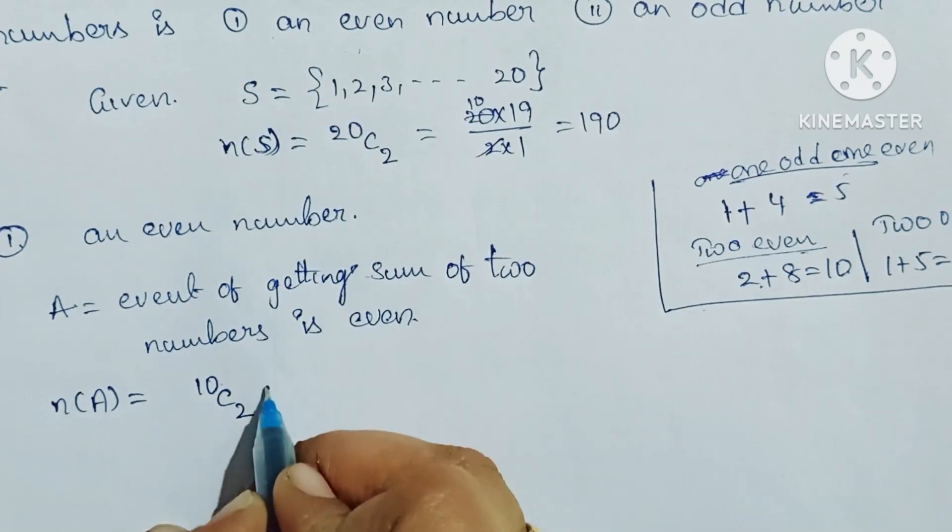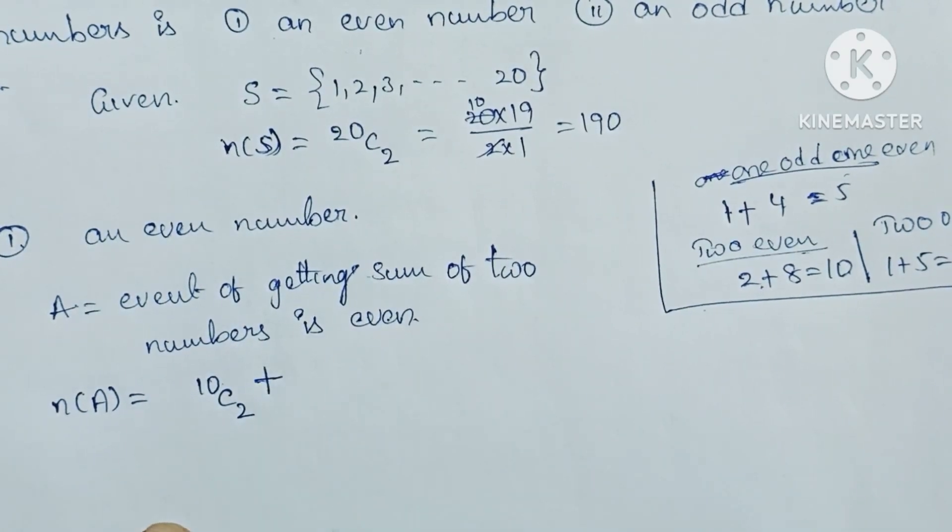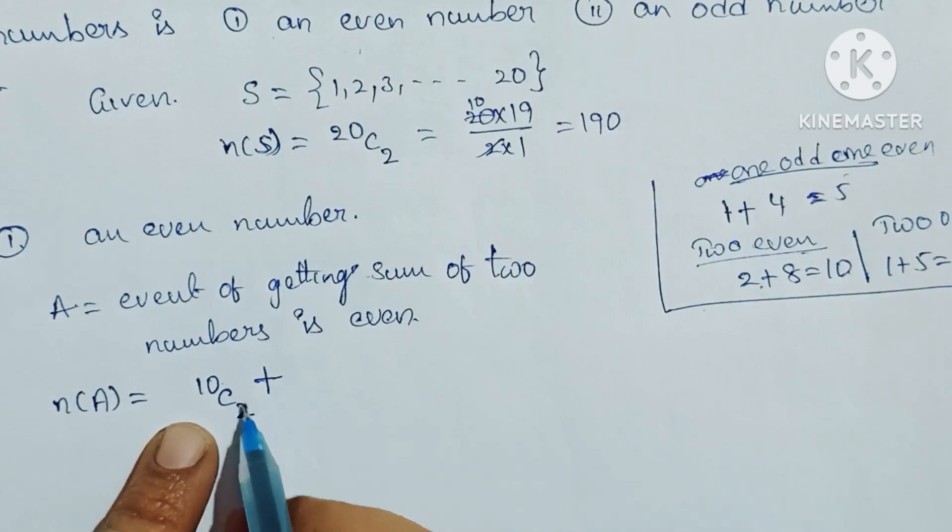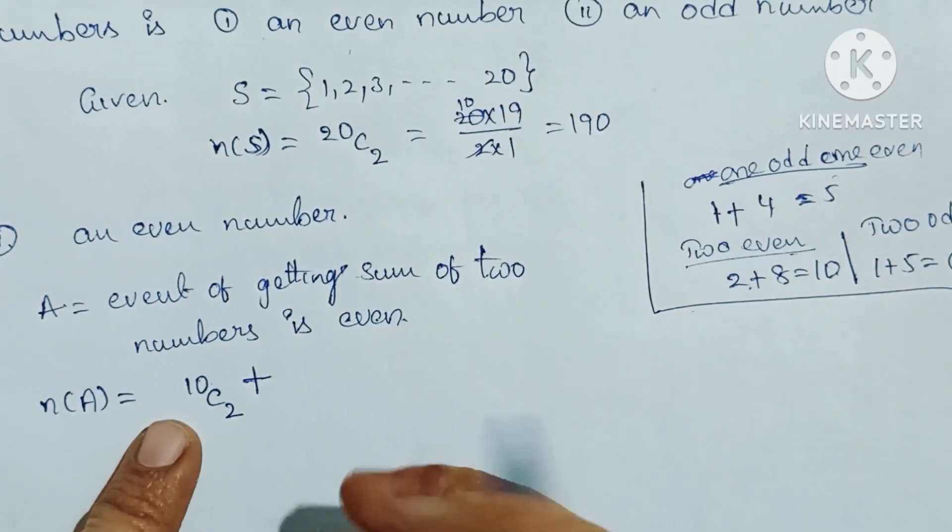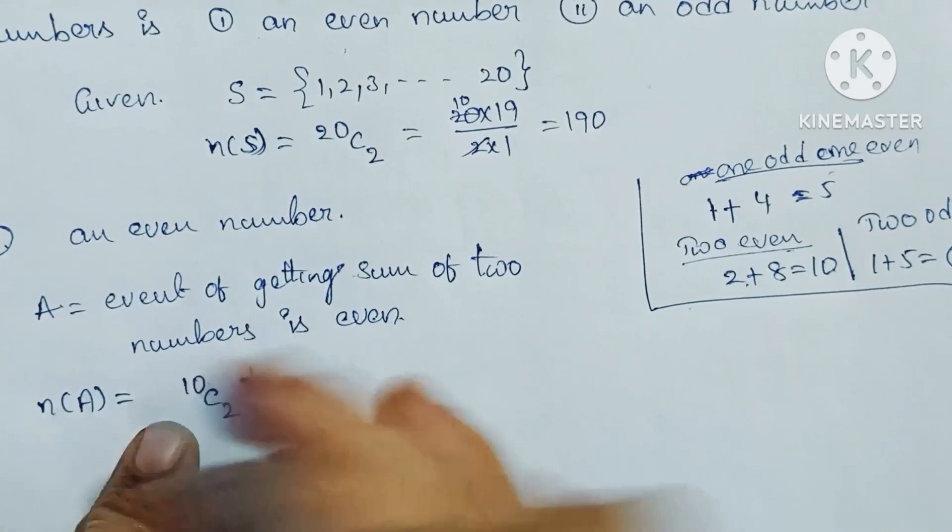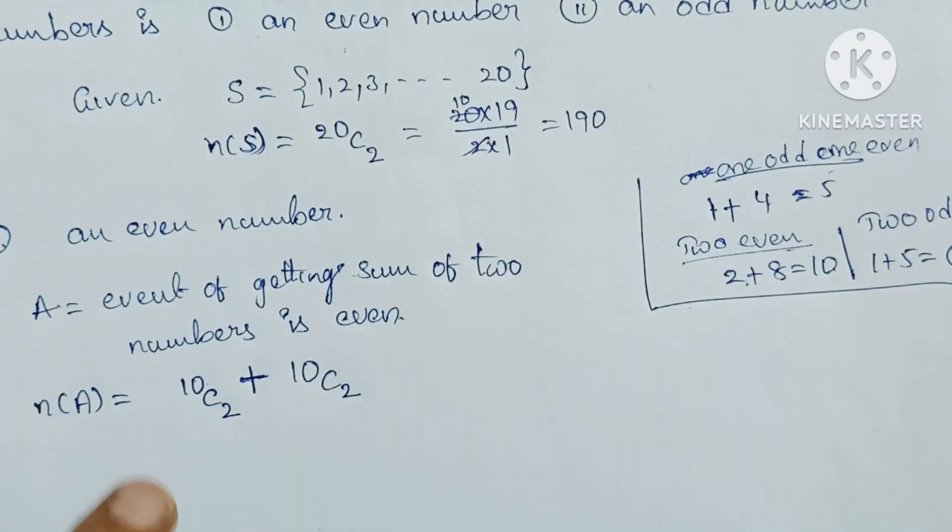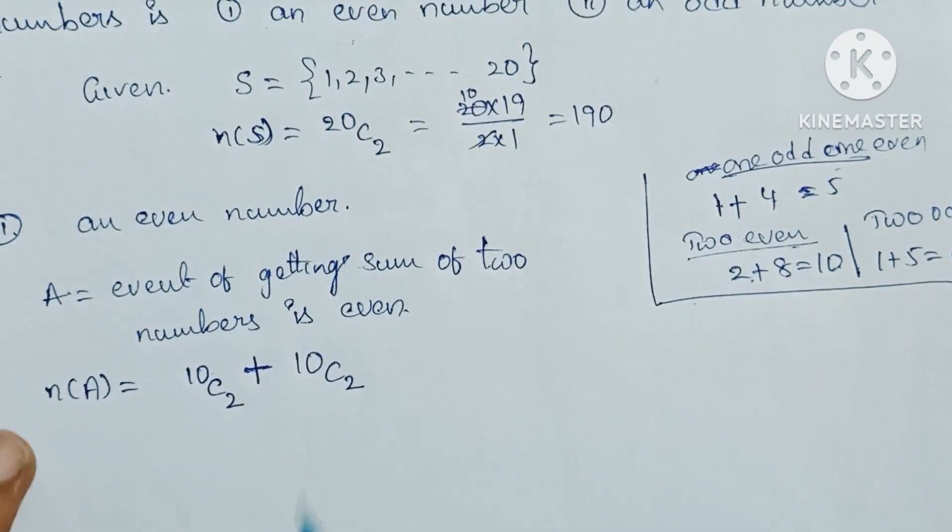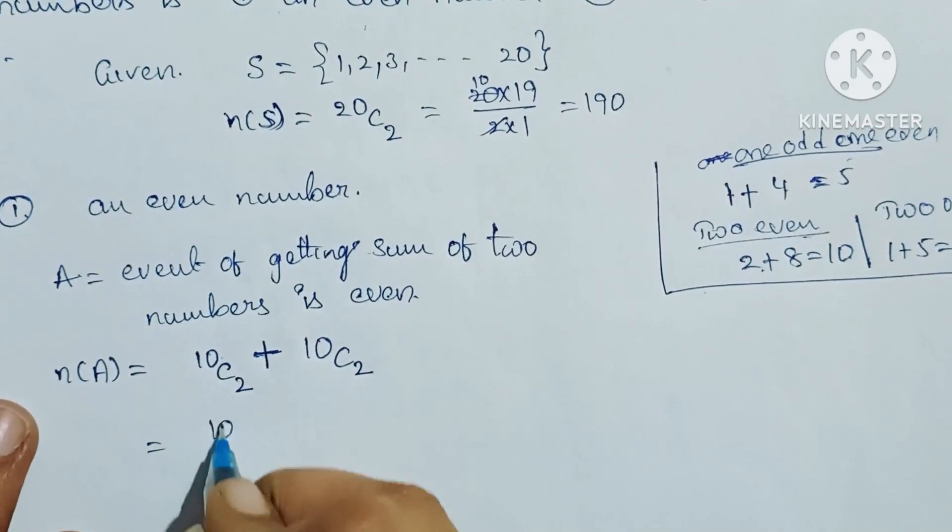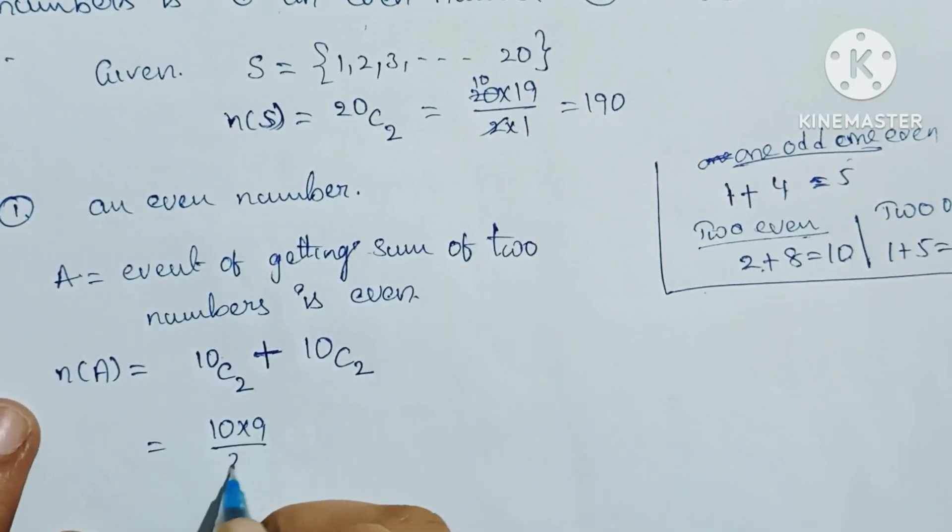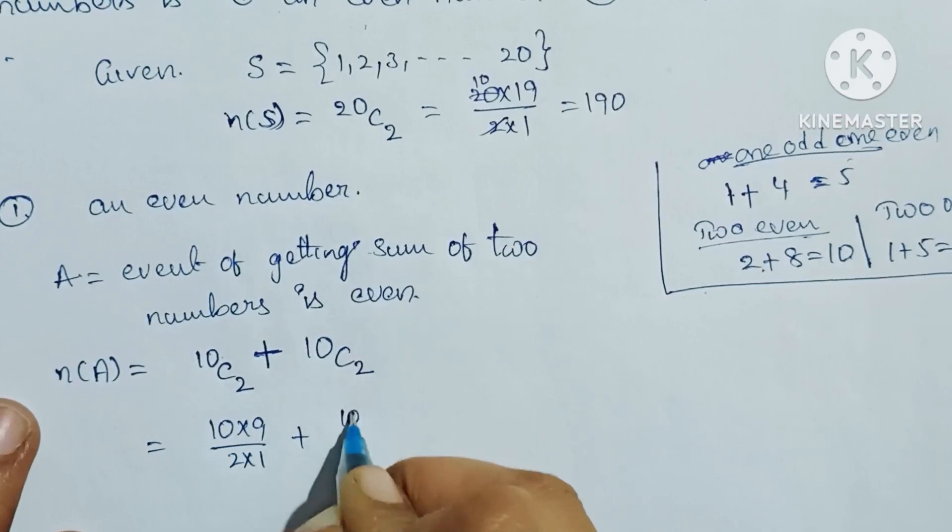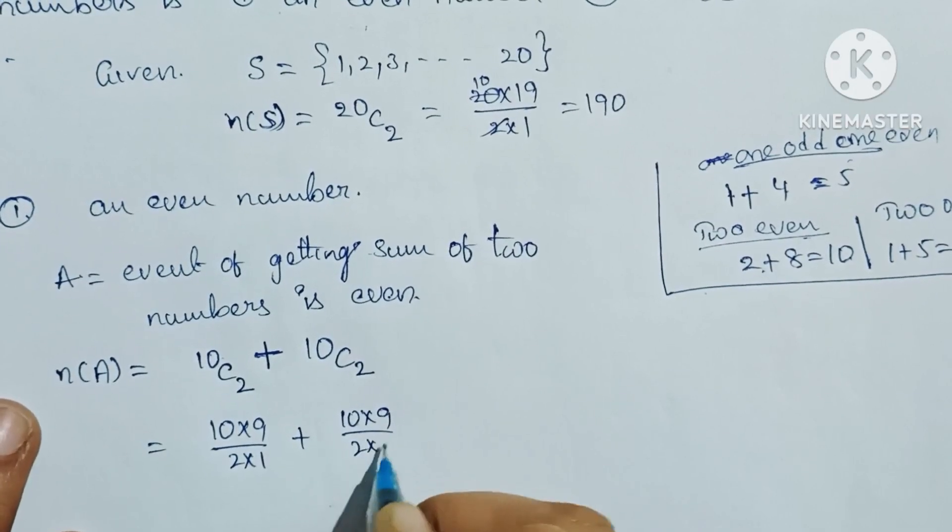Even numbers or 2 odd numbers. In total, there are 10 even numbers and 10 odd numbers. n(A) equals 10C2 plus 10C2. This simplifies to 10 into 9 by 2 into 1 plus 10 into 9 by 2 into 1, using decreasing order.